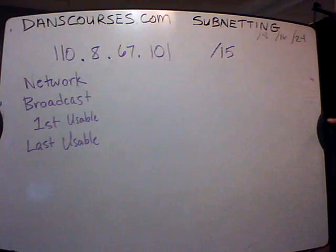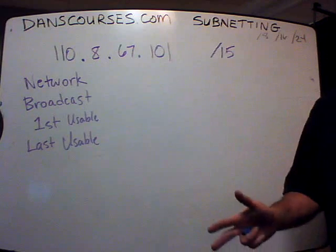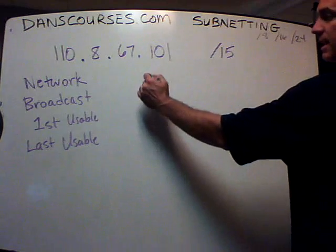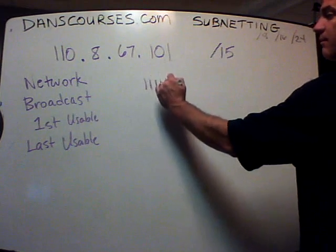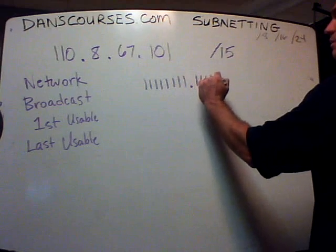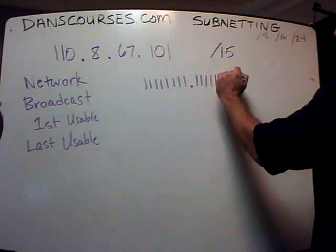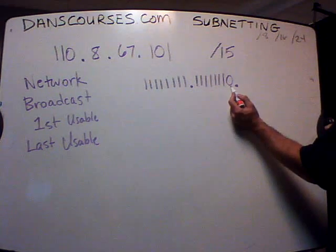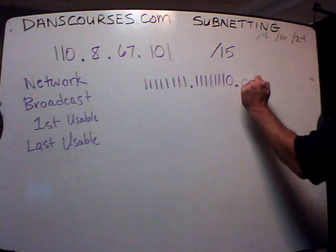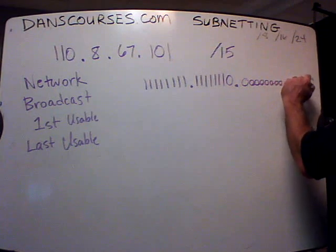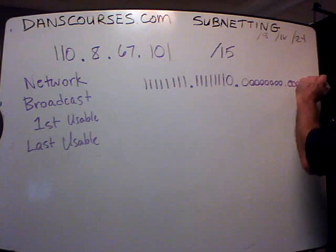If you have slash 15, what is the magic number? The magic number is 2, but how do we find that out? You have to write it out in binary. You write slash 15 in binary like this — 15 ones and then a zero, and then the rest is all zeros.